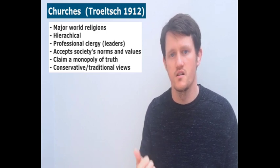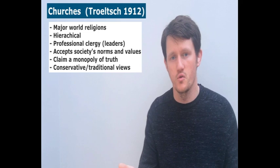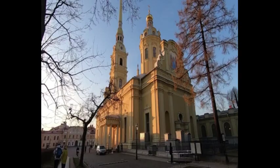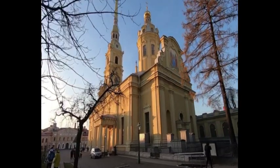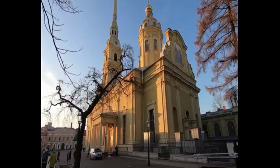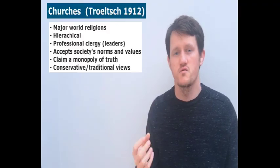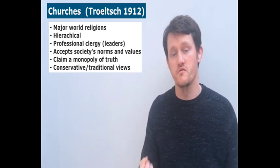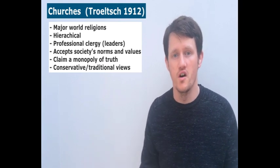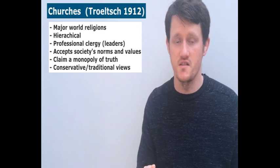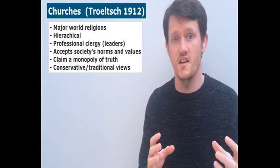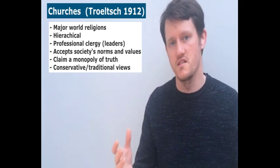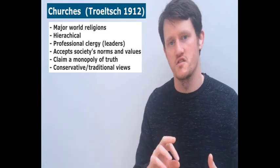What do they all have in common? They tend to have a strict hierarchy and structure, and to be highly organised. They tend to see society as okay, as acceptable, so they're not offering radical alternatives. In this sense, they tend to be quite conservative — they don't offer radical change. They tend to recruit millions of members, so they'll have a very wide membership. And if you're a member of a church, you can't be a member of another religious organisation. In many cases, churches will be closely linked to the government or the state. For example, the Church of England represents the state — it runs all the royal marriages, funerals, etc.